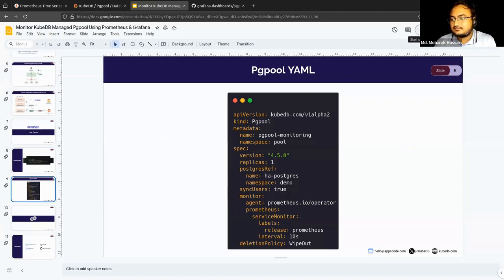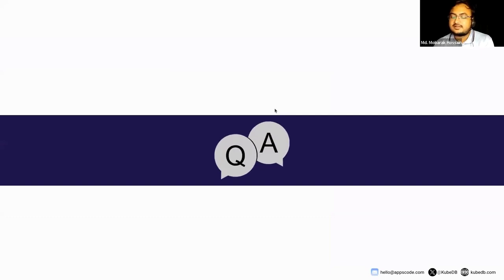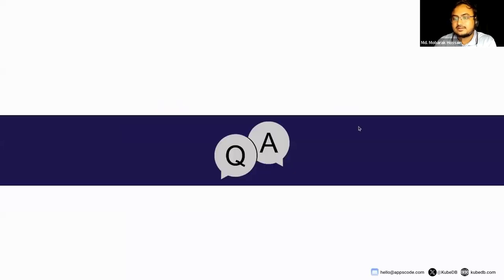Let's talk about the next features. The next thing to discuss is ops requests — how you can manage the lifecycle of PgPool from day two. You have ops request types such as reconfigure TLS, rotate certificates, remove TLS, add TLS, or reconfigure your server. You can do all of these things, and we will cover this in the next webinar. If you guys have any questions, we can definitely discuss about them.